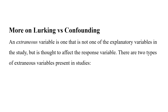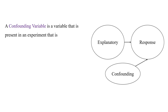Confounding is most often found in experiments, and lurking is most often found in observational studies. That's not always the case, but that's typically what we see in AP Statistics examples. In this course, you don't necessarily have to know the difference between lurking and confounding on the AP exam — the AP CED doesn't mention lurking variables — but it does mention confounding. Still, if you use these terms in your explanations, you need to use them correctly.